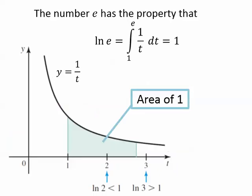The number e has the property that the area under the curve from 1 to e is equal to 1.